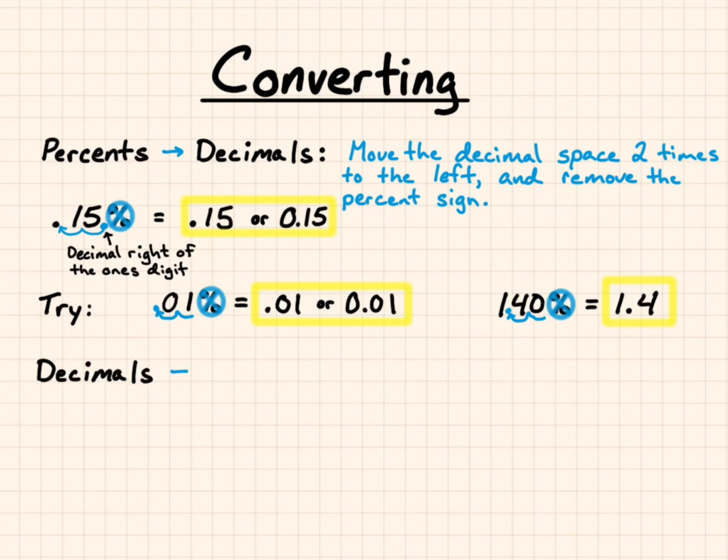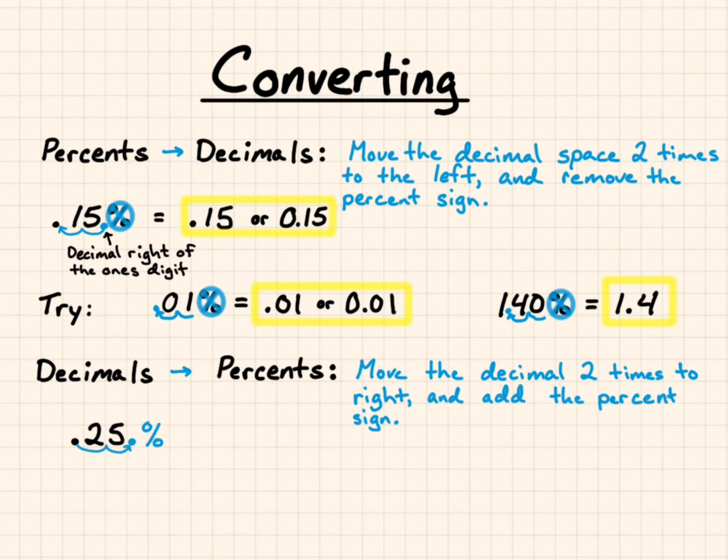Converting from decimals to percents, move the decimal two times to the right, and add the percent sign. 0.25 becomes 25%. Try these.